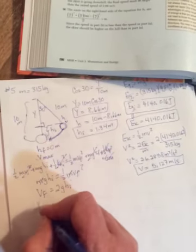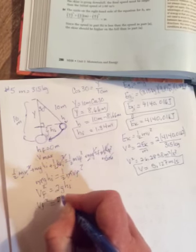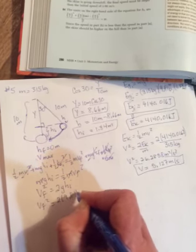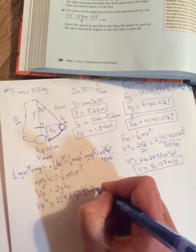Fill in your numbers. Don't lose your squared. 2 times 9.81 meters per second squared, times the height we found there earlier, 1.34 meters.